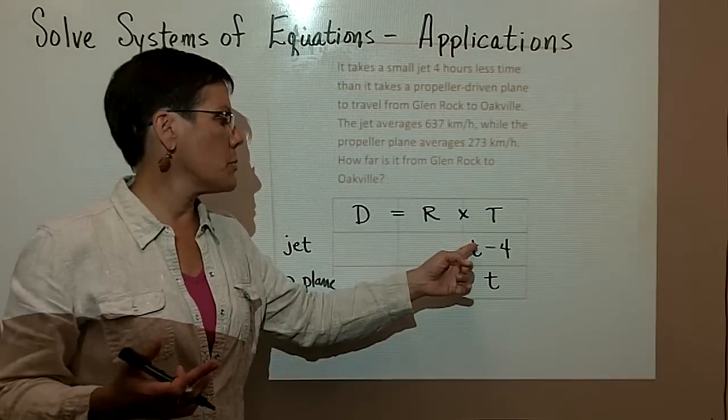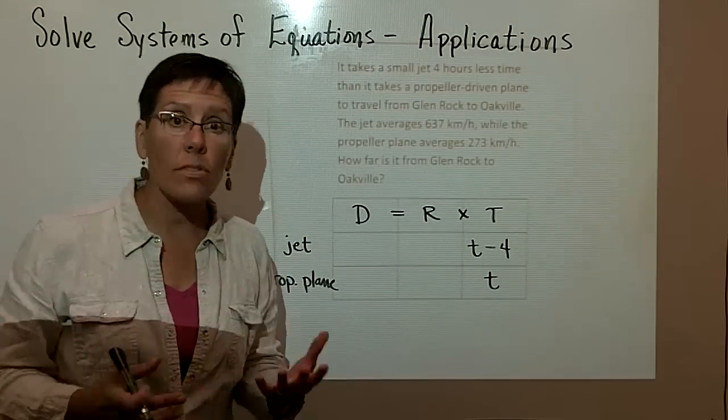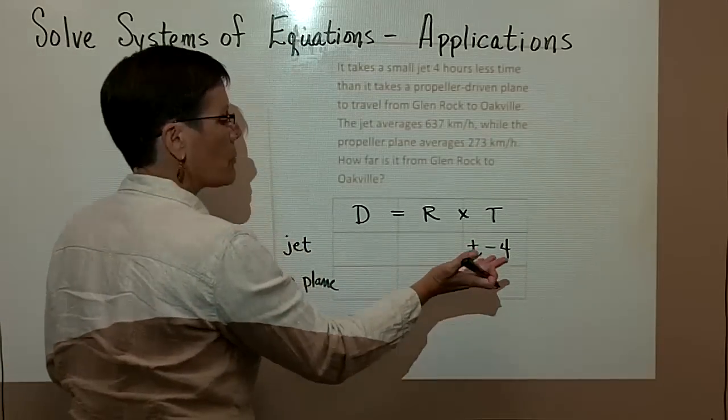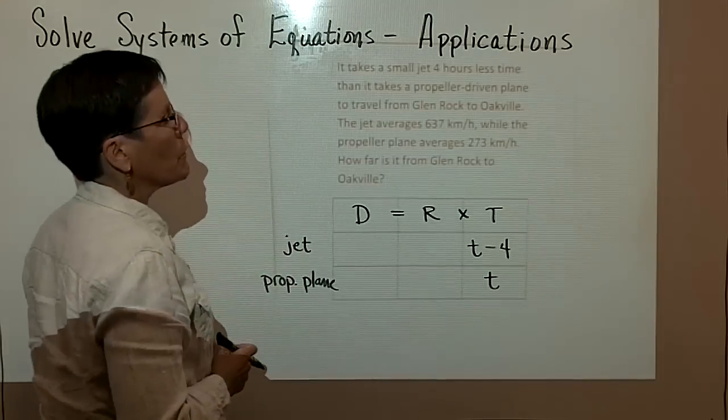You could let this be T and this be T plus four if you'd like, because the prop plane is slower. It doesn't really matter which way you do it. I just chose to let the propeller plane be T because we described the jet in terms of the propeller plane.